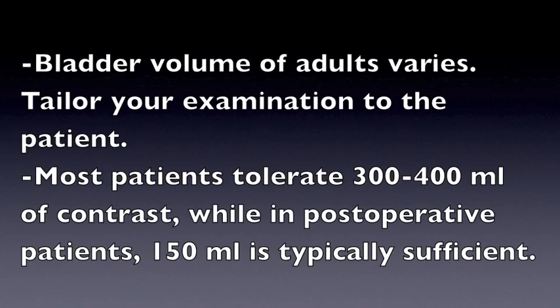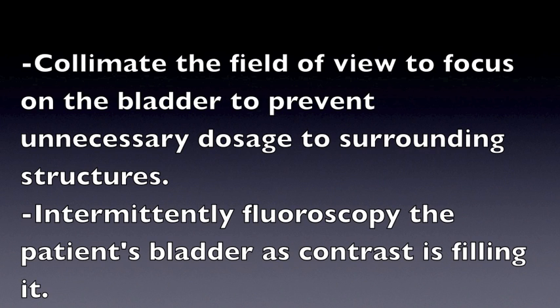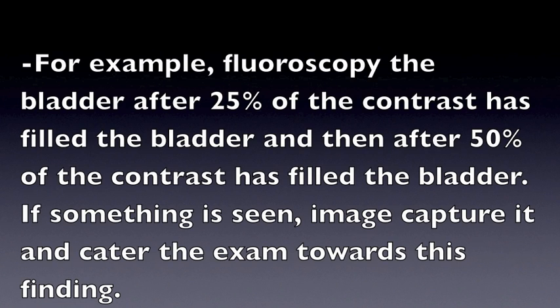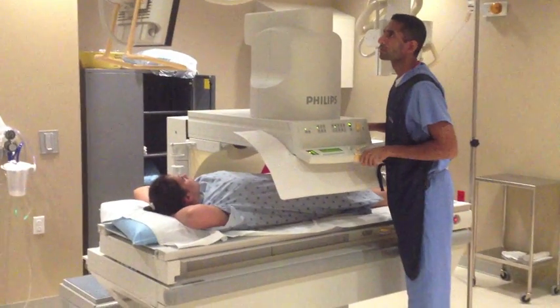Bladder volume in adults varies, so tailor your examination to the patient. Most patients tolerate 300 to 400 milliliters of contrast, while in postoperative patients, 150 milliliters is typically sufficient. Collimate the field of view to focus on the bladder to prevent unnecessary dosage of the surrounding structures. Intermittently fluoroscopy the patient's bladder as contrast is filling it — for example, after 25% and then after 50% of contrast has filled the bladder. If something is seen, capture an image and cater the exam towards that finding.